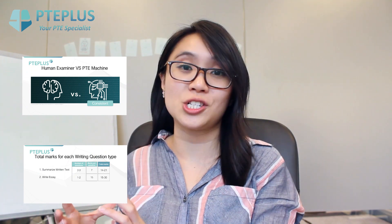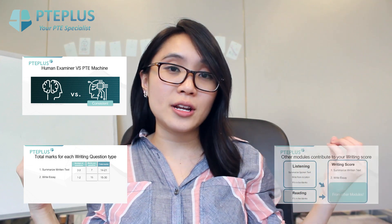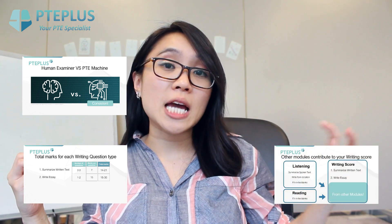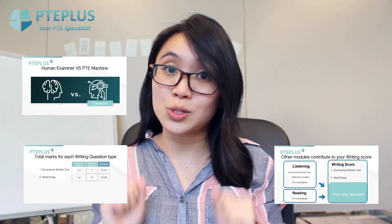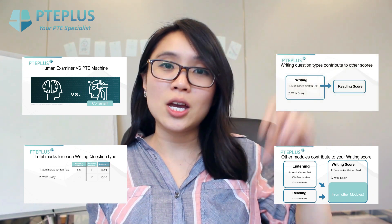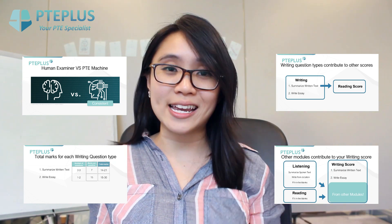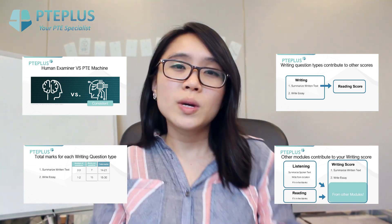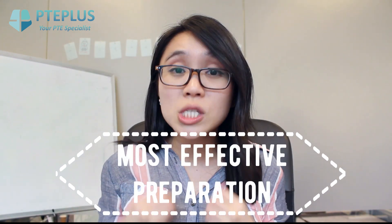So now we've covered the key understandings for PTE writing: first, it is machine based and quite different to a human-scored exam; second, understanding how your writing question types contribute to your writing score; and third, knowing that question types in other sections also add to your writing score, and your writing question types contribute to scores in other sections as well.